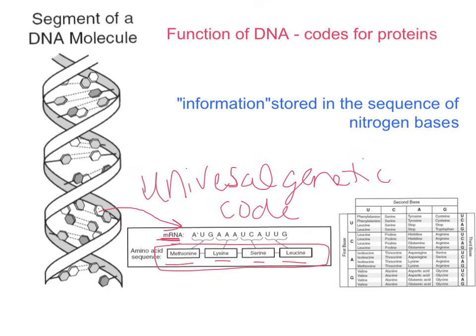The DNA told the messenger RNA; the messenger RNA got that information translated into amino acids, therefore a protein. The universal genetic code states that if AUG codes for methionine in a plant protein, AUG in a human cell, a fly cell, or a fungus cell would still code for methionine. These little sections of messenger RNA and DNA code for the same amino acid no matter what organism you find it in.